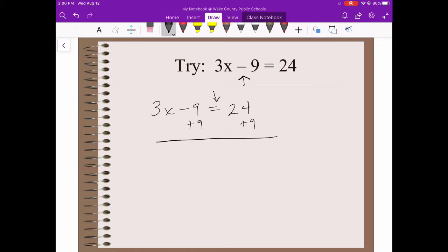3x, I'm not doing anything to it, so I'll just bring it down. But then, negative 9 plus 9 is 0. So that's where this idea of canceling out comes from, because if those two things add up to 0, that no longer affects 3x. 24 plus 9 is 33, and now I'm down to one last step before I can get x by itself.